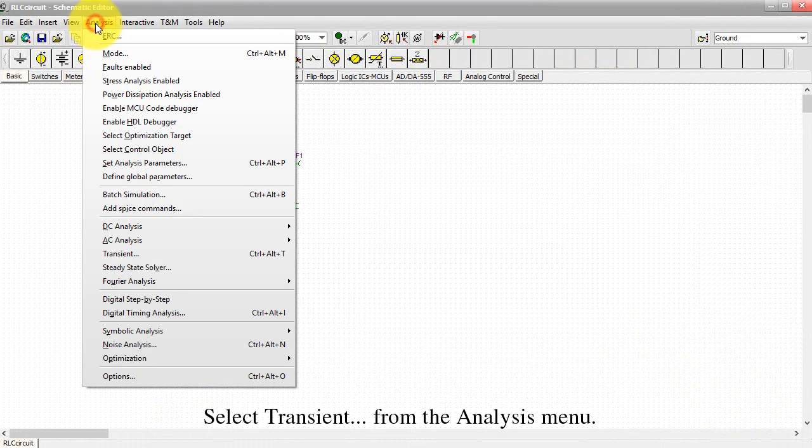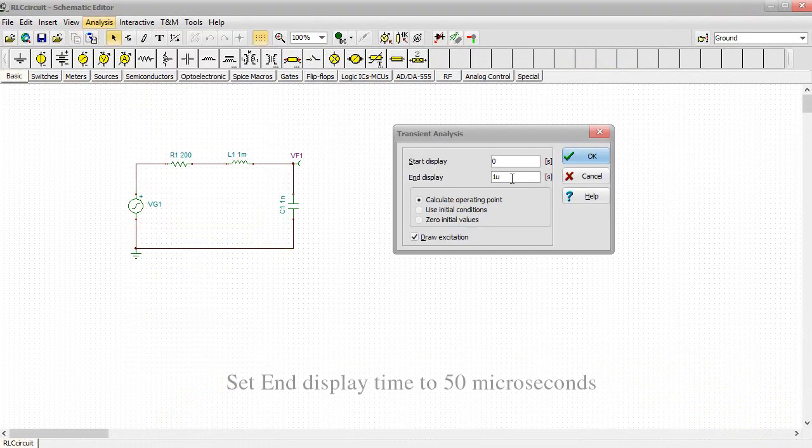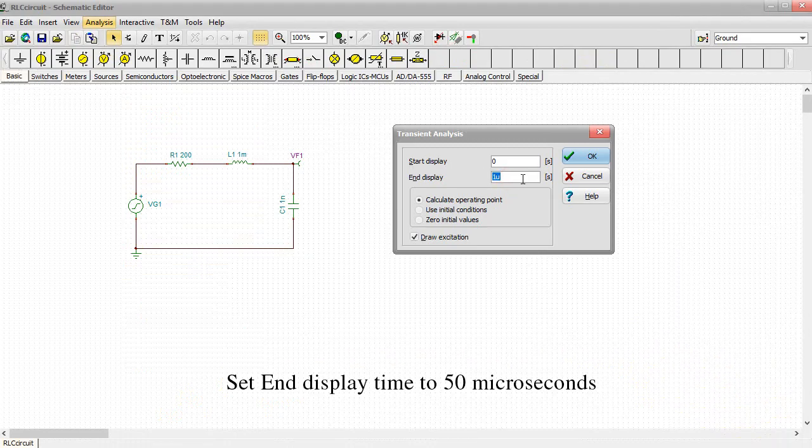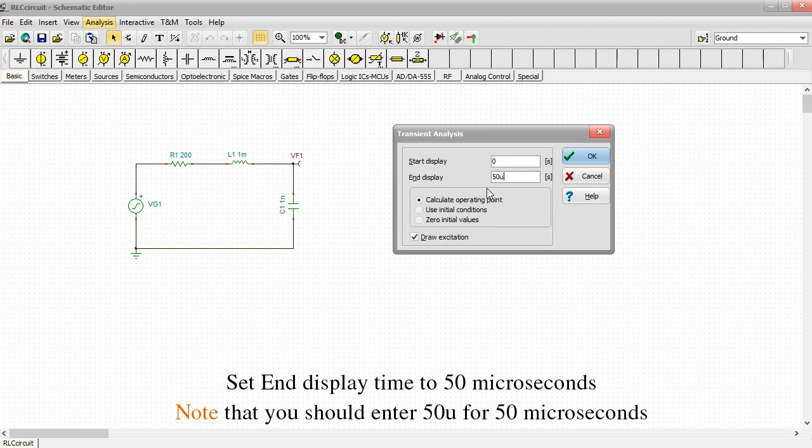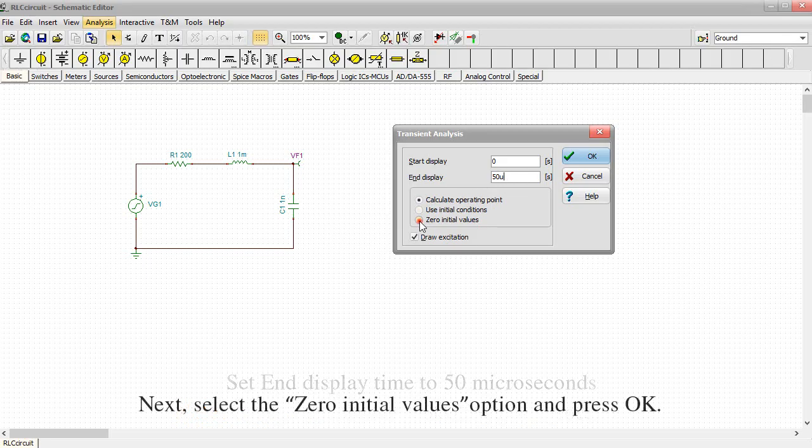Select Transient from the Analysis menu. Set the end display time to 50 microseconds. Note that you should enter 50U for 50 microseconds. Next, select the Zero Initial Values option and press OK.